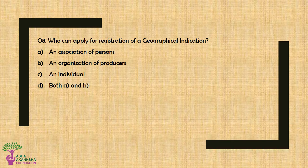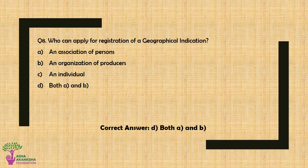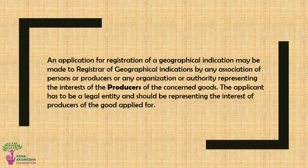Question No. 8: Who can apply for registration of a geographical indication? Option A: An association of persons, Option B: An organization of producers, Option C: An individual, or Option D: Both Option A and Option B. The correct answer is Option D. An application may be made to the Registrar of Geographical Indications by any association of persons or producers, or any organization or authority representing the interest of the producers of the concerned goods. The applicant must be a legal entity representing the interest of producers.